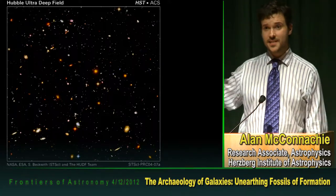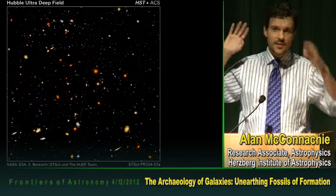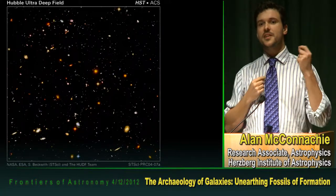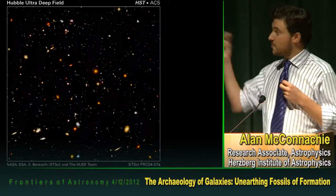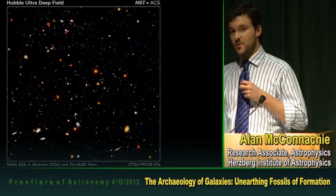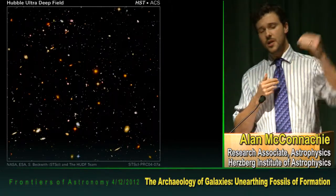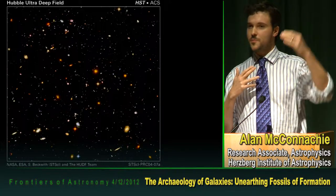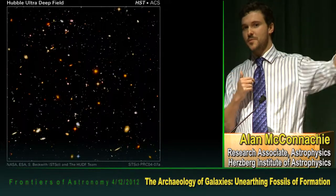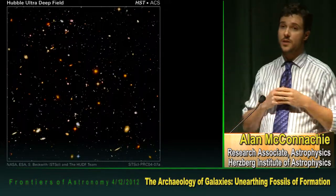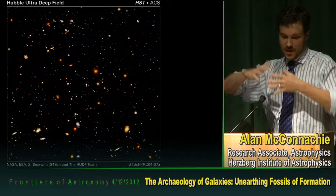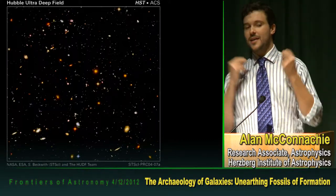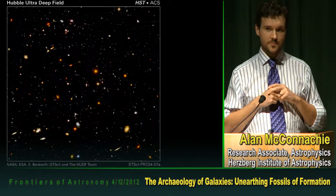Some of those galaxies are so far away that because of the finite light travel time, you're basically seeing them as they were many billions of years ago — in some cases, soon after the Big Bang. So you're effectively seeing snapshots of the lives of galaxies: some middle-aged, some very young, some very old, in a vast variety of different shapes and colors.